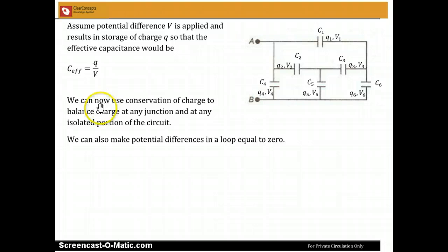We would use conservation of charge to balance charge at any junction. So let us assume we applied a positive potential at A and negative at B, then your plus Q would flow through this junction, and it would split here. But where does it end up? It ends up on C1, C2 and C4. And so I can get Q is equal to Q1 plus Q2 plus Q4.